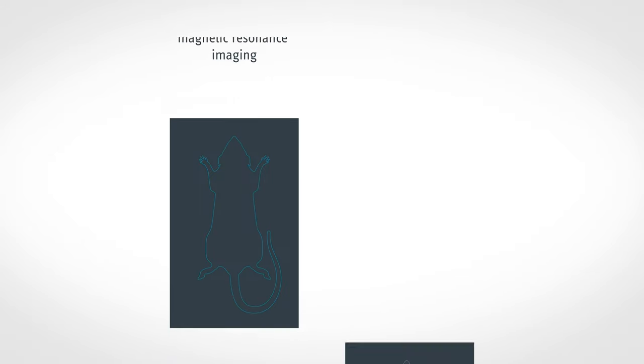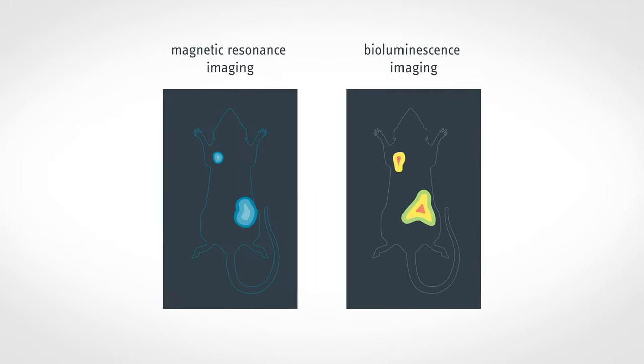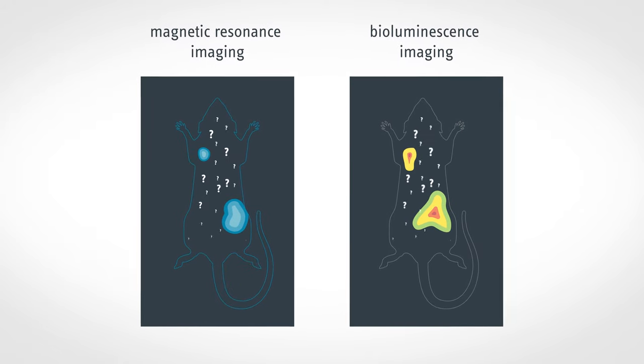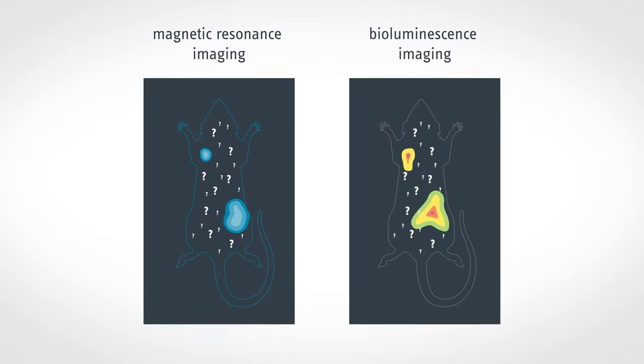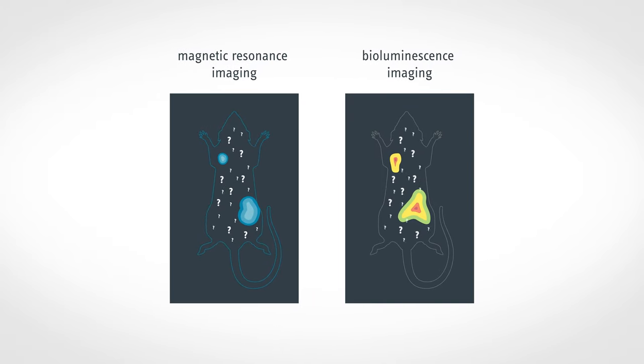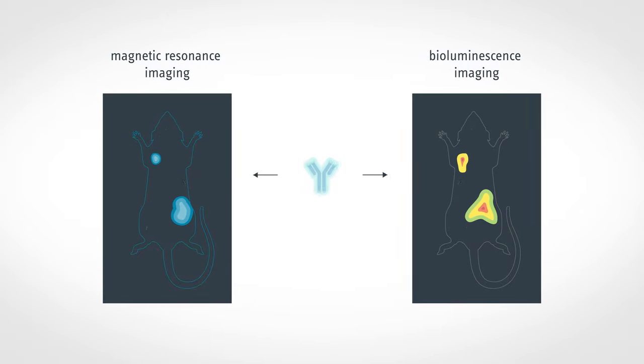For example, magnetic resonance imaging and bioluminescence imaging can detect large tumors, but fail to detect hundreds of smaller metastases that can also be lethal. Crucially, these methods cannot evaluate whether a drug candidate actually reaches all small metastases.